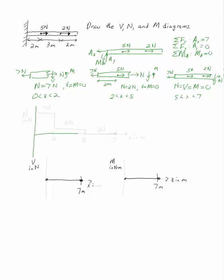So my N diagram, N in newtons, will go from 7 down to 2 and then down to 0 at, respectively, 2, 5, and 7 meters. Your V diagrams and your M diagrams are uniquely 0.